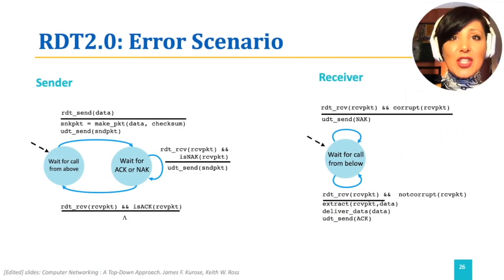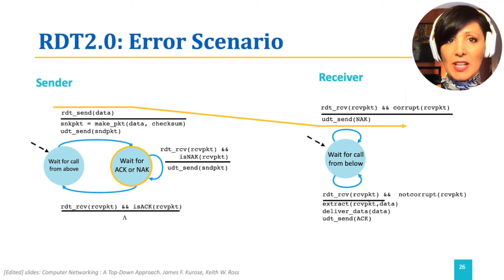Now, the series of actions in case of error in transmission. Again, the process starts with the wait for data from the layer above. When data has arrived from the higher layer, the packet is made and sent. The state is changed so that the sender is waiting for positive or negative ACK from the receiver.